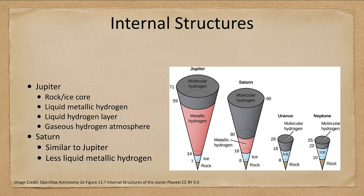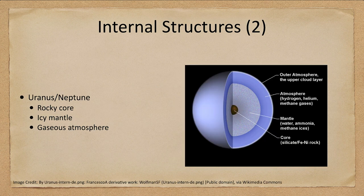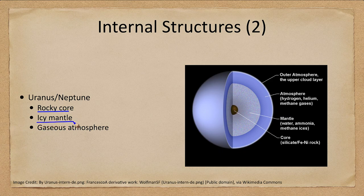Saturn again is very similar except that it has less metallic hydrogen. For the outer two planets, Uranus and Neptune, a cutaway shows that they have a rocky core — again nothing we could ever reach, as there is far too much material, density, and pressure to make it down close to that — an icy mantle, and a gaseous atmosphere. That is what we see when we look at any of these objects.